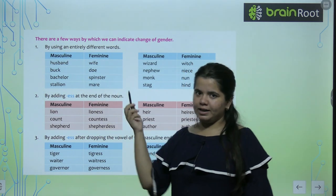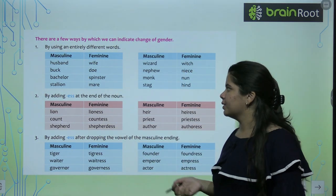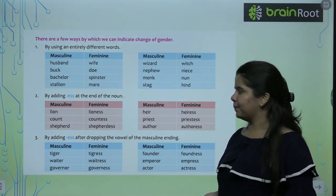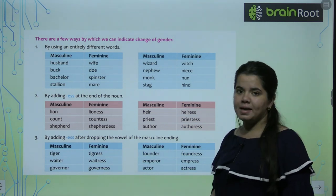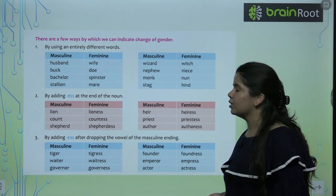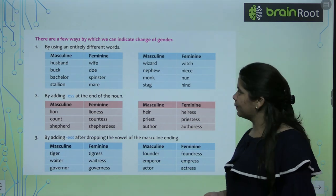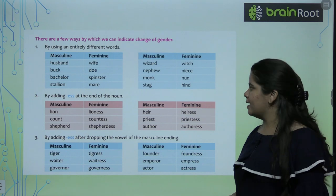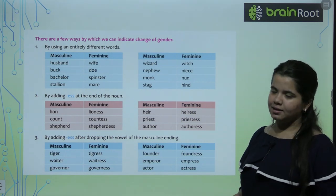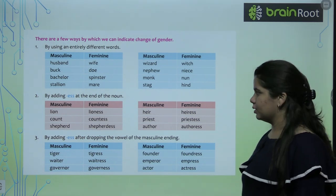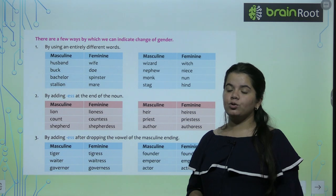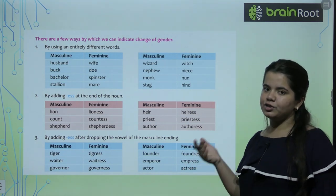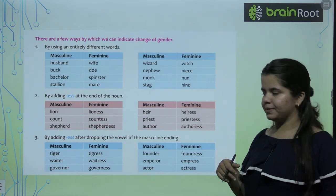Kuch yaisi hoti hai jab hum bilkul new words use karthi hai — jaise masculine and feminine ye column hai. Husband ka wife — ek dum naya word. Buck, doe. Bachelor, spinster. Stallion, mare. Wizard, witch. Nephew, niece. Monk, nun. Stag, hind. Yeh sare words aapko is tarike se yaad hone chahiye, and you have to learn the feminine of each of the masculine and vice versa.